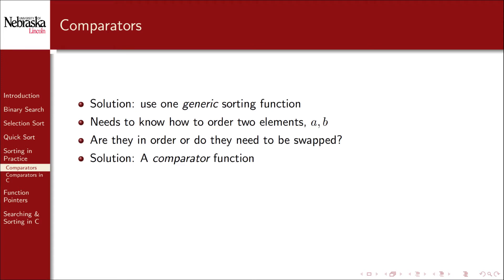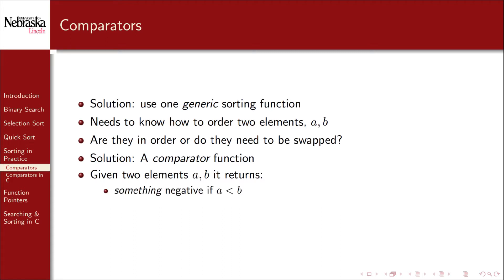To accomplish this, we need something called a comparator function. A comparator function is simple. It takes two elements A and B, and it returns some negative integer value if A comes before B. It returns 0 if A is equivalent to B, and it returns a positive integer value if A comes after B.